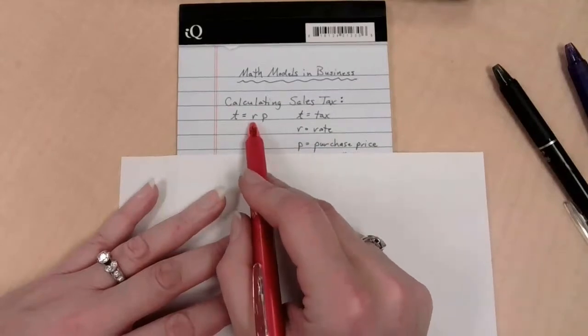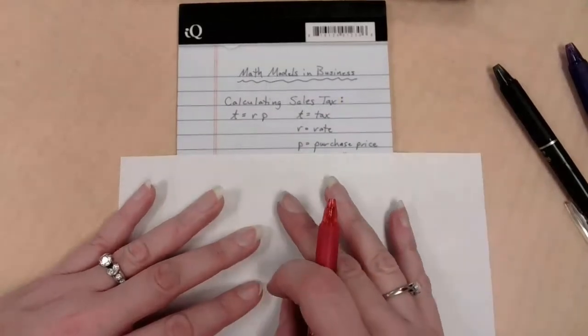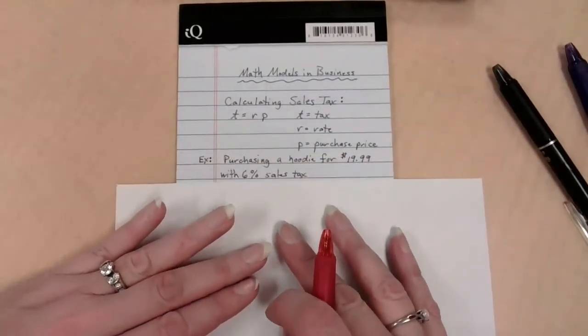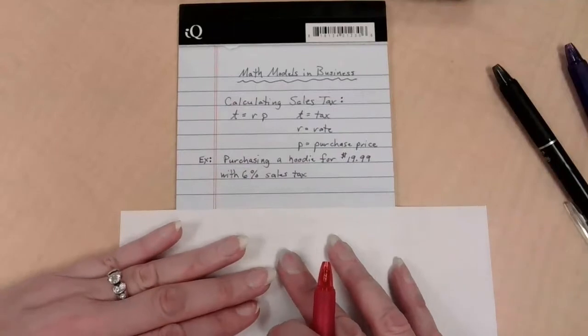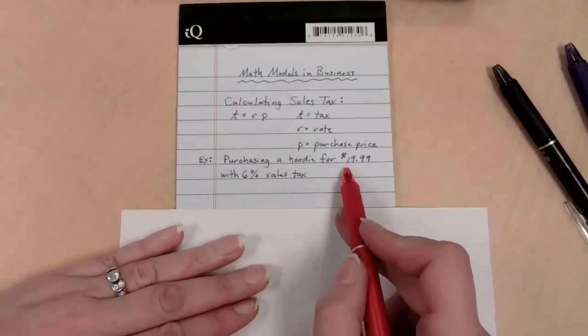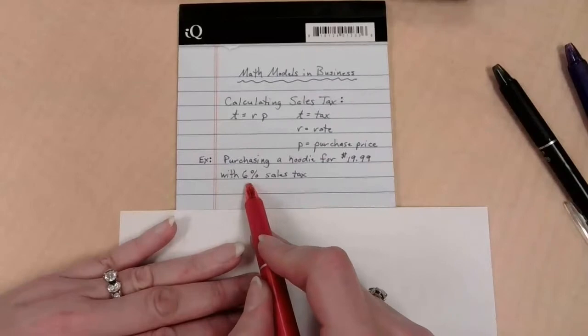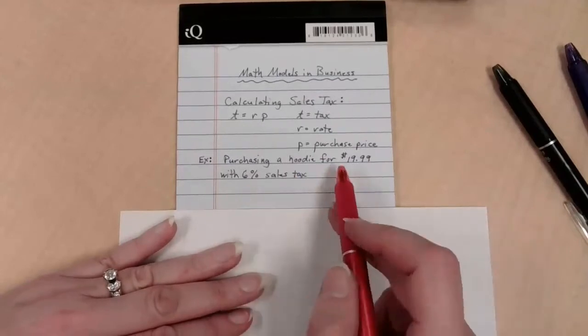Rates should be written as decimals, otherwise your calculations end up being really weird and kind of wrong. So let's say for the fun of it, here's our example. We're going to be purchasing a hoodie for $19.99, and I live in Michigan that has 6% sales tax. So how much tax am I going to pay on this?